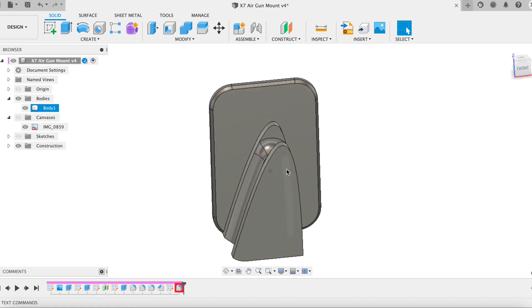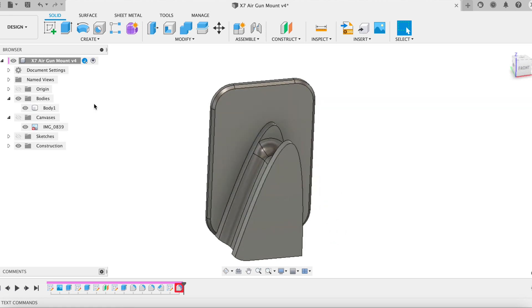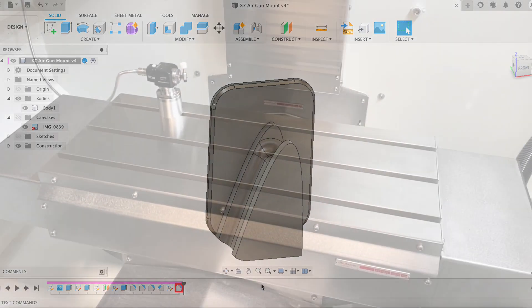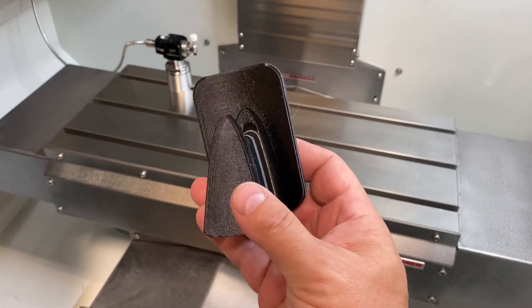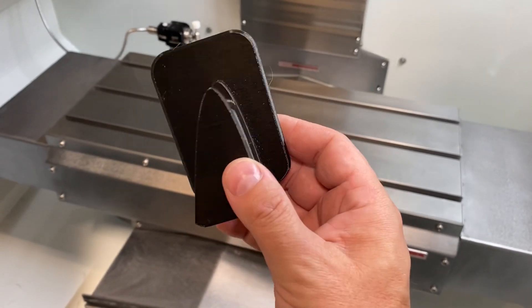It took about an hour and a half to print. We printed a couple of different versions. I just used PETG. We printed one on the Ender. We printed one on the Prusa. And then this is it. This is the one from the Prusa. Just a really nice clean print.